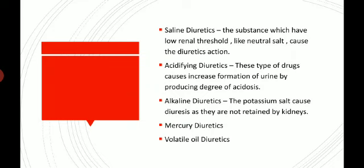Acidifying diuretics: this type of drug causes an increase in the formation of urine by producing a degree of acidosis. Alkaline diuretics: potassium salts cause diuresis as they are not retained by the kidney. Mercury diuretics: mercurial compounds are irritant to the kidney and to the tubules, hence their reabsorption is inhibited. In therapeutic practice, they are not used because they damage the kidney.